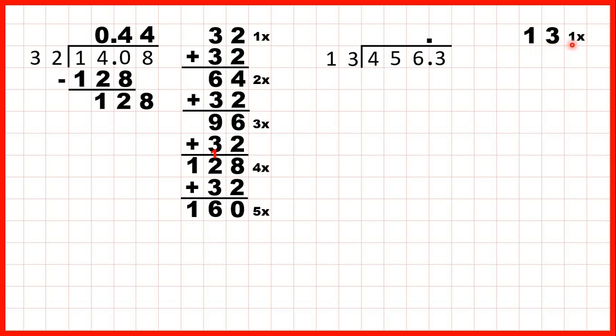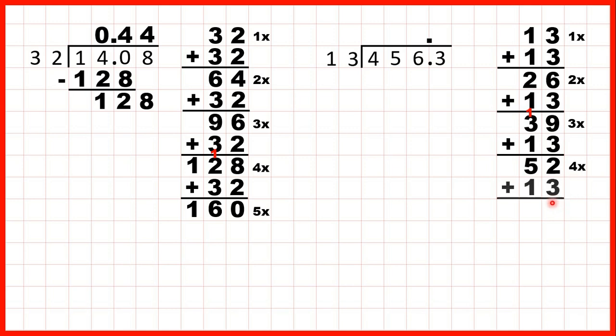13 is 1 times 13. If we add another 13, we get 26 for 2 times. 39 for 3 times. If we add another 13, 9 plus 3 is 12. So 1, 2. 1 plus 3 plus 1 is 5. So that's 52 for 4 times. And if we add another 13, we get 65 for 5 times.